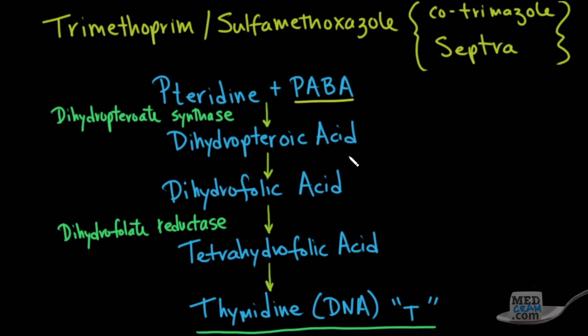Dihydropteroic acid goes to dihydrofolic acid. Dihydrofolic acid, then under the enzymatic action of dihydrofolate reductase, makes tetrahydrofolic acid, which then finally goes to thymidine. Now in bacteria, if we can inhibit these two enzymes, then perhaps the bacteria will cease making thymidine and the bacteria will die. And that's exactly what this antibiotic does.